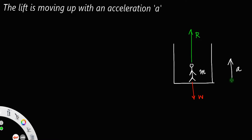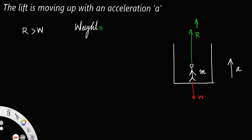Since the lift is accelerating upward, we have R greater than W — the reaction is greater than the weight. Here, the weight W is equal to mg; weight will always be the mass of the person multiplied by acceleration due to gravity.